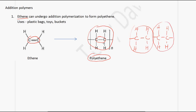The key thing to remember is that the double bond disappears and it becomes a single bond. Examples of uses of polyethene include plastic bags, toys, and buckets.